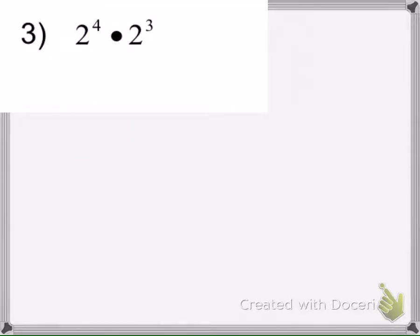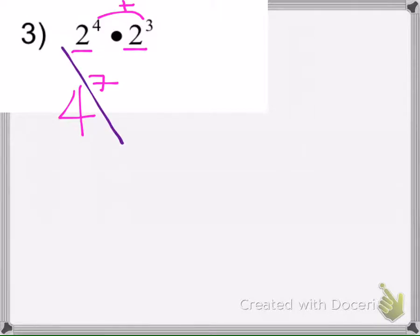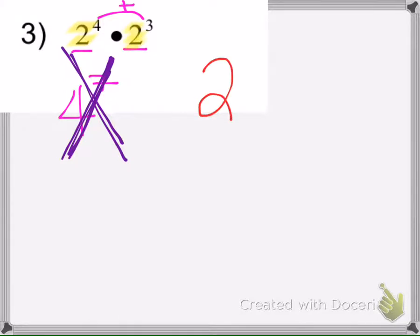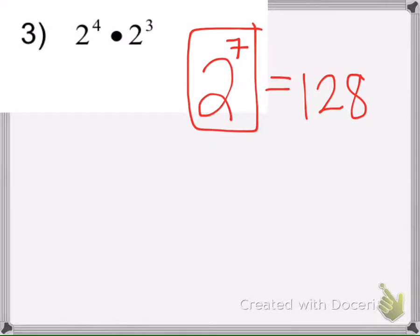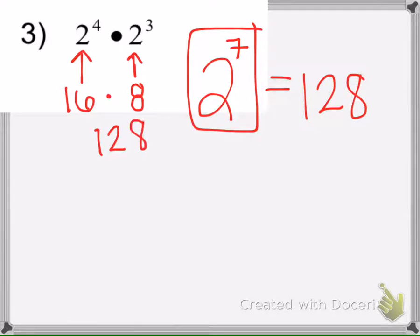Example 3: 2 to the 4th times 2 to the 3rd. Remember, the base is the number or variable with an exponent in the upper right. So we do not do 2 times 2 equals 4 and then 4 plus 3 equals 7 — that's wrong. The rule says if the base is the same, keep it and add the exponents: 2 to the 7th. You can verify: 2 to the 4th is 16, 2 to the 3rd is 8, and 16 times 8 is 128, which matches 2 to the 7th.